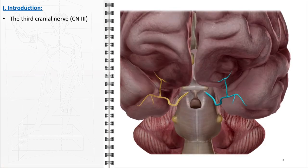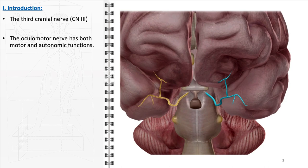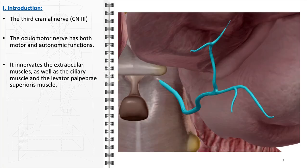The third cranial nerve, also known as the oculomotor nerve, plays a crucial role in eye movements and pupil response. It has both motor and autonomic functions, making it essential for controlling several key aspects of ocular functioning. Motor functions of the oculomotor nerve include the innervation of the majority of the extraocular muscles. These muscles are responsible for most eye movements, such as upward, downward, and medial gaze.